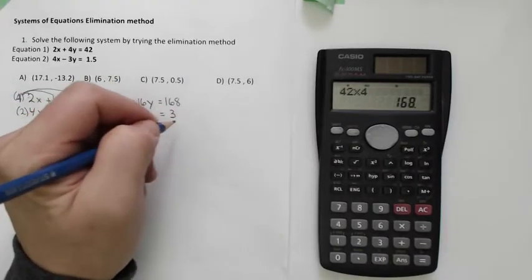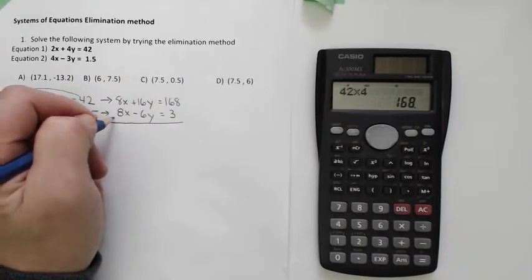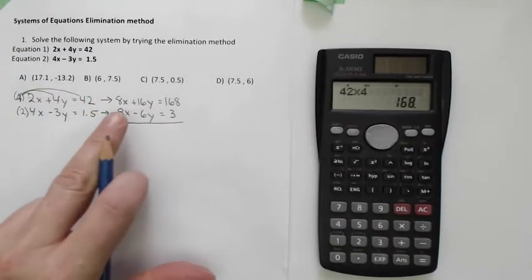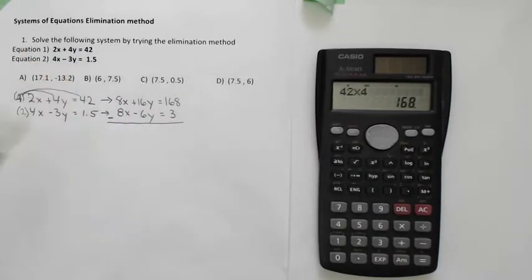Now the last step is to subtract. I know it's called sometimes the addition method, but we're going to subtract the second one from the first one. When we do that, I'll use my red pen here to emphasize this. When you subtract it,